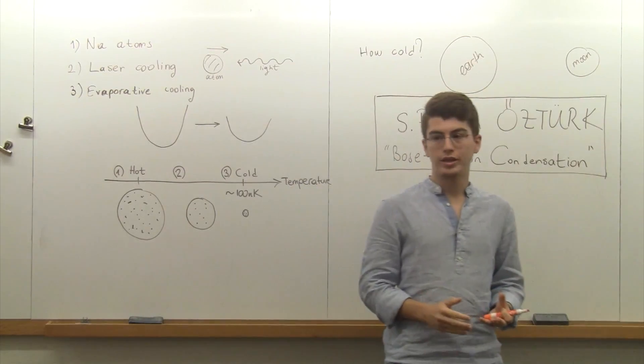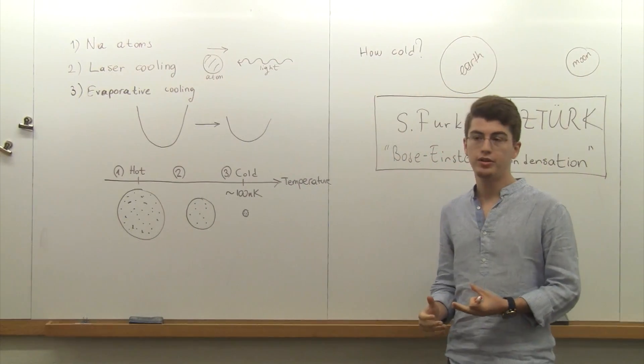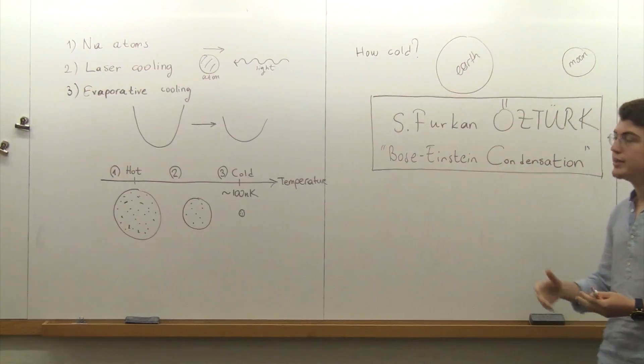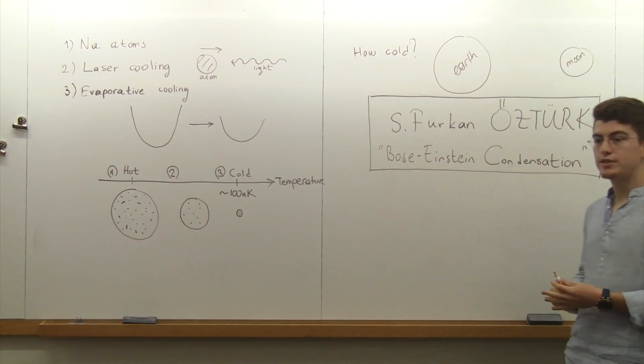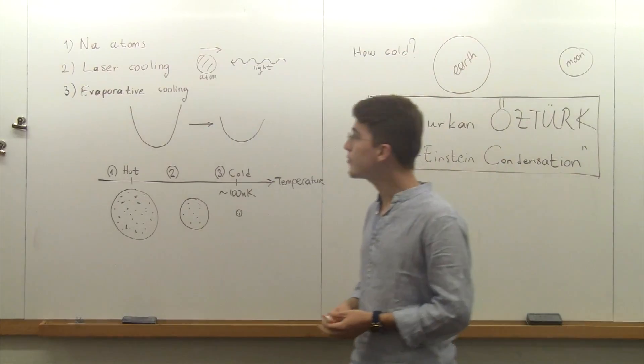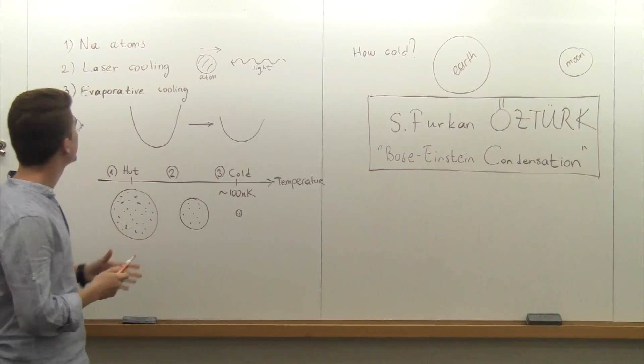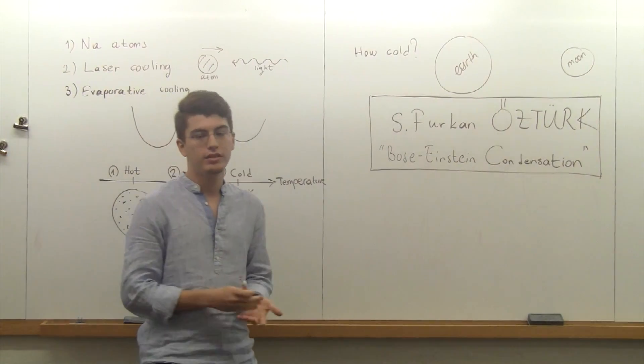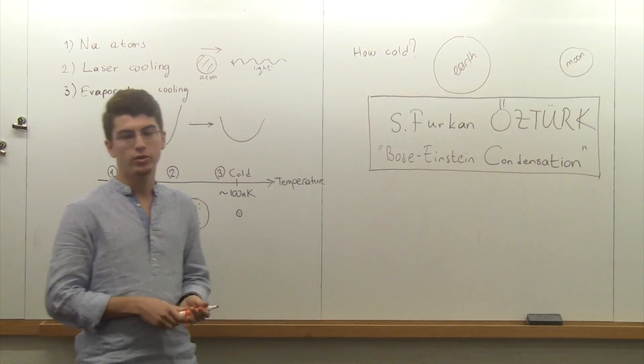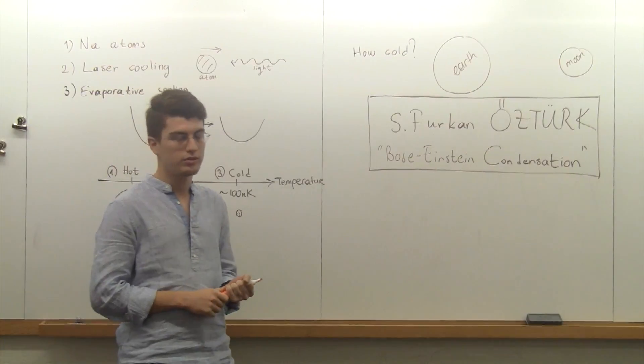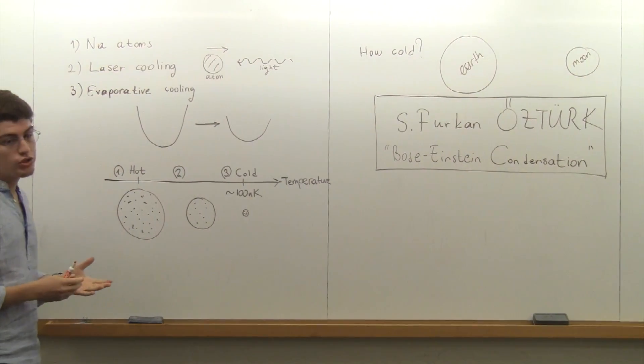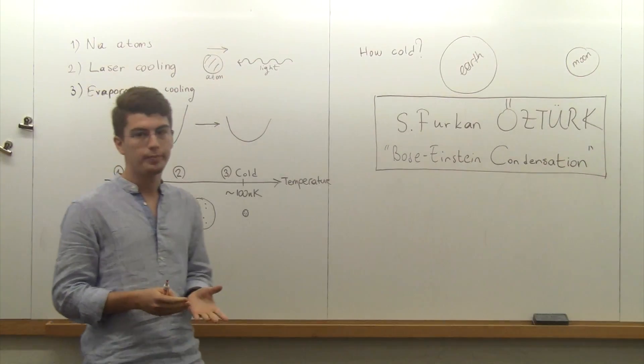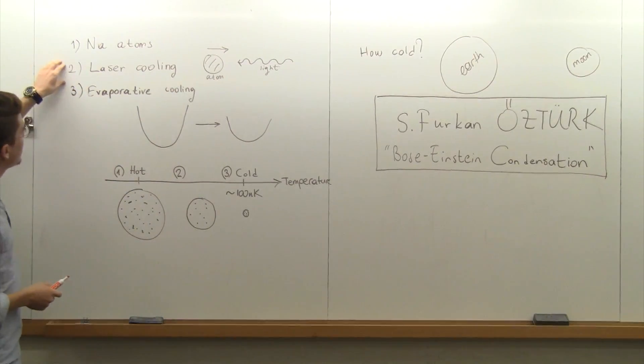First, you need to reach very cold temperatures to produce that state of matter. I will introduce how to produce that condensate and then talk about some details and why it matters. So first, you get billions of sodium atoms - the same atoms that you have on your regular table salt. Then, as I said, you need to cool them. There are several stages to cool them. First, we use laser cooling.